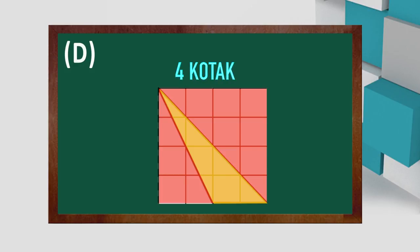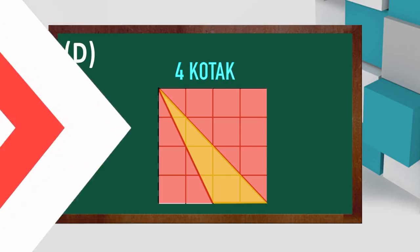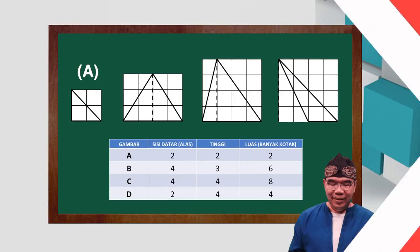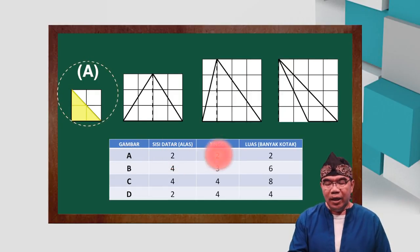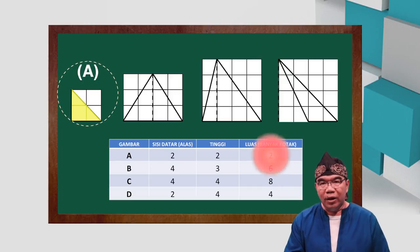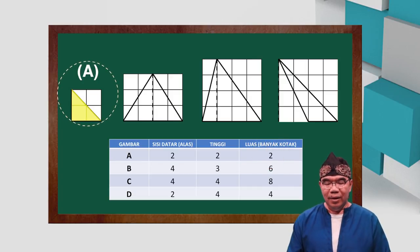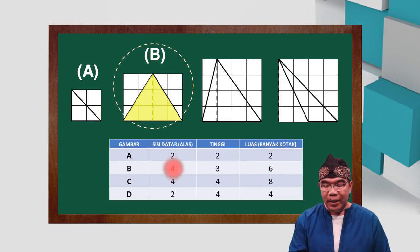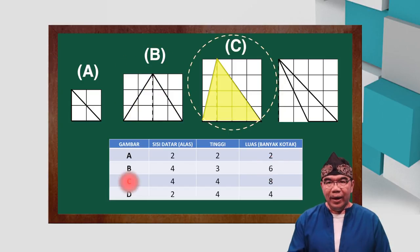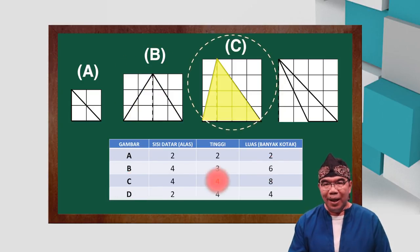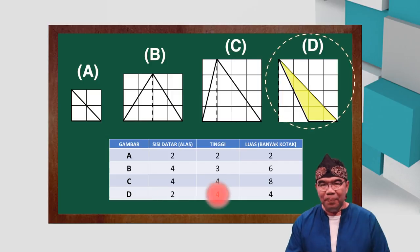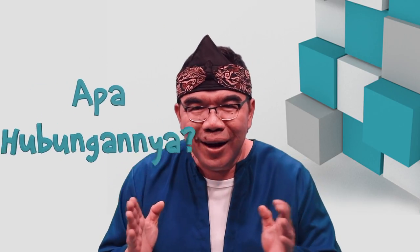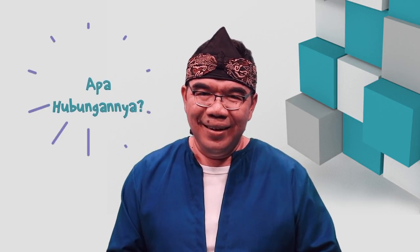Anak-anak, mari kita lihat hubungannya. Yang A: sisi datar 2, tinggi 2, banyak kotaknya 2. Yang B: 4, 3, 6. Yang C: 4, 4, 8. Yang D: 2, 4, 4. Coba, apa hubungannya? Ada yang bisa menemukan?